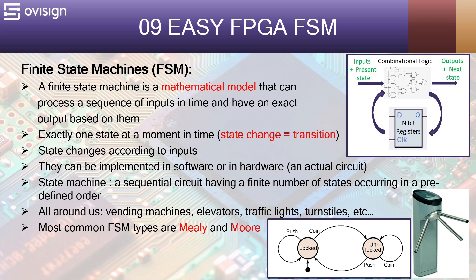Let's do a brief introduction into finite state machines. A finite state machine is a mathematical model that can process a sequence of inputs in time and have an exact output based on them. A state machine has exactly one state at a moment in time. When the state changes, this is called a transition. The state of an FSM always changes according to its inputs. The hardware implementation is a sequential circuit having a finite number of states occurring in a predefined order.